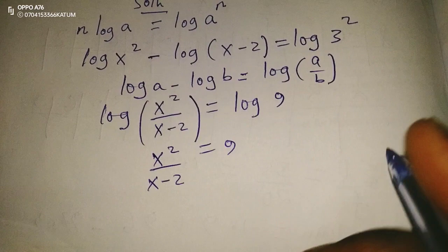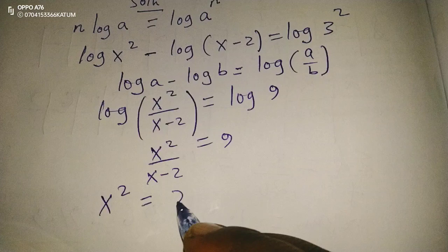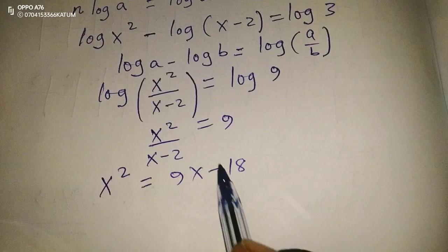Then we cross multiply. This will give us x² equals 9x minus 18. When we open this by 9, we get 9x minus 18.